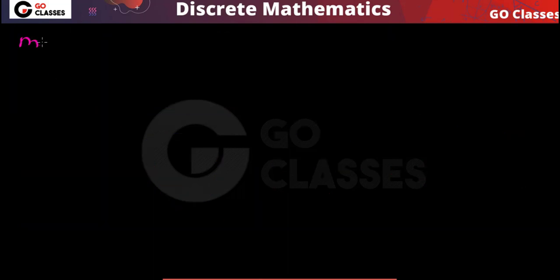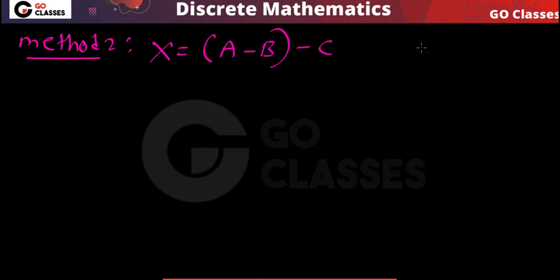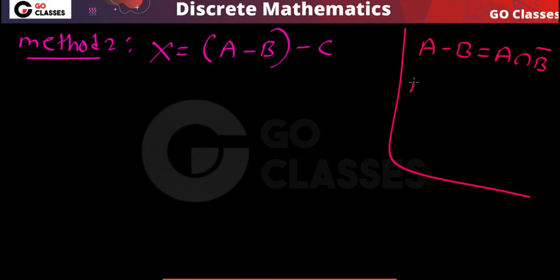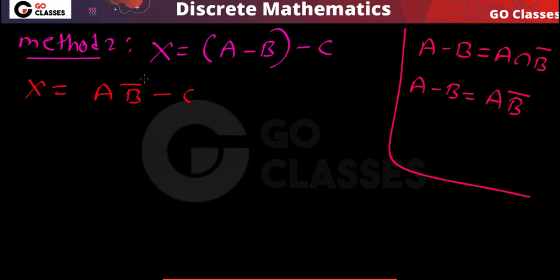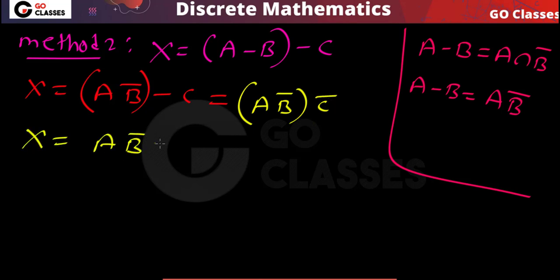The answer is option A: X equals Y. Now let's see Method 2. Set X is A minus B minus C. We know that A minus B equals A intersection B-bar. So X becomes A intersection B-bar minus C, which simplifies to A intersection B-bar intersection C-bar.